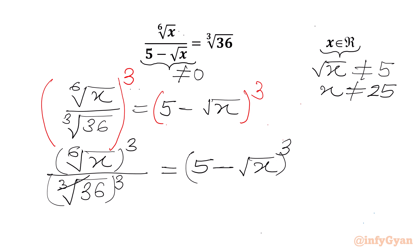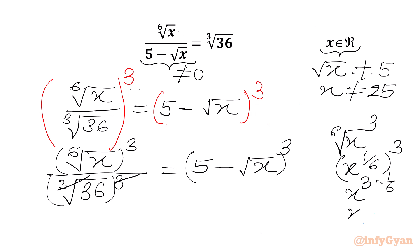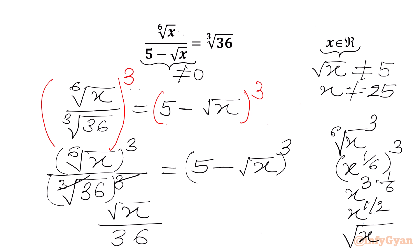The cube root and cube cancel in the denominator. In the numerator, 6th root of x whole cube is x to the power 1/6 whole cube. Using the exponent law we multiply both powers, giving x to the power 1/2, which is square root x. So the numerator is square root x, denominator is 36.